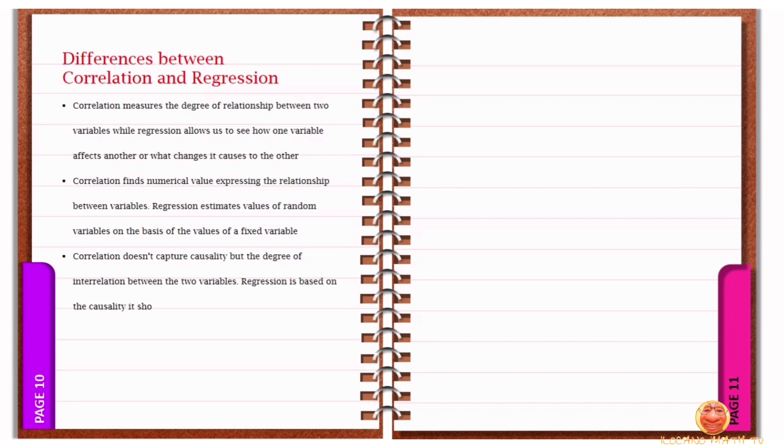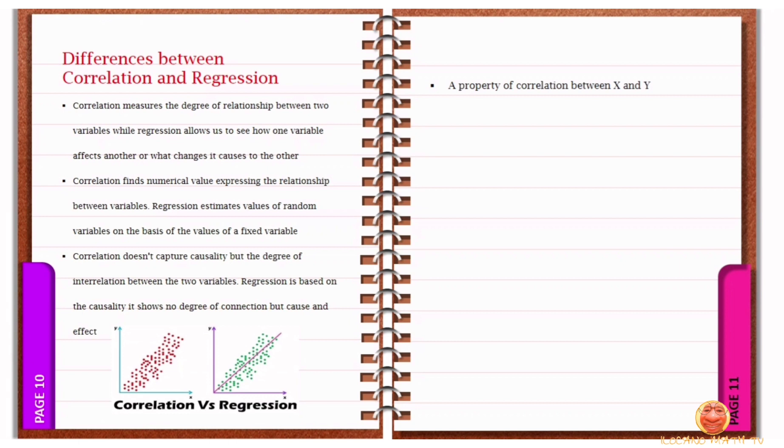Regression is based on the causality; it shows no degree of connection but cause and effect. A property of correlation between X and Y is the same between Y and X, which you can see in the formula, that is symmetrical. Regression X and Y, and Y and X can have a different result of analysis.